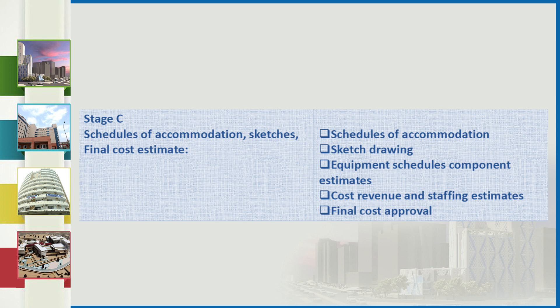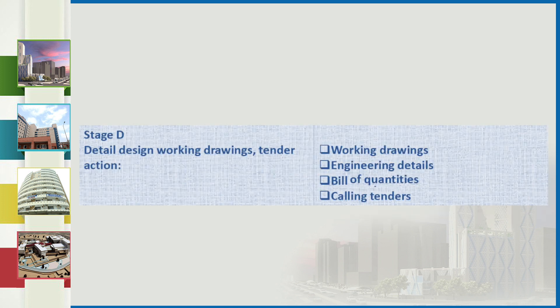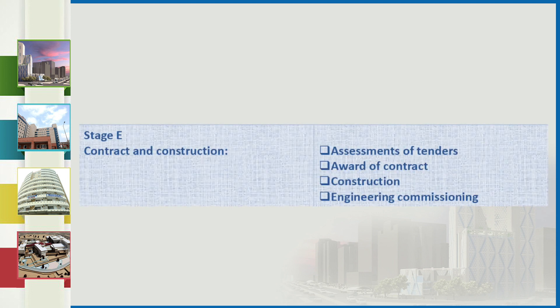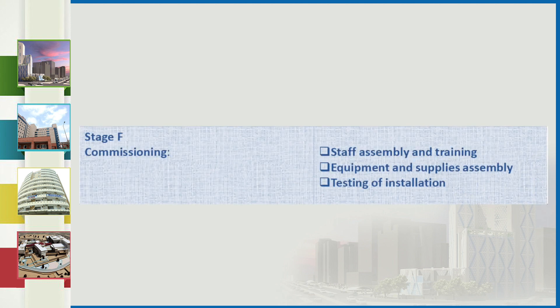The next stage is the schedule of accommodation, sketch drawings, and final cost estimate, including equipment schedules, component estimates, cost-revenue and staffing estimates, and final cost approval. Then comes the detail design and working drawings stage with engineering details and bill of quantities, followed by calling of tenders. After that is the contract and construction stage — assessment of tenders, award of contracts, construction, and engineering commissioning. This is followed by the commissioning stage (staff assembly, training, equipment and supply assembly, testing) and finally the shakedown period with post-occupancy evaluation.